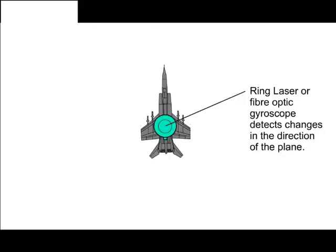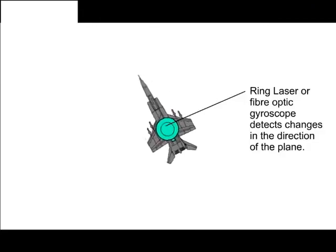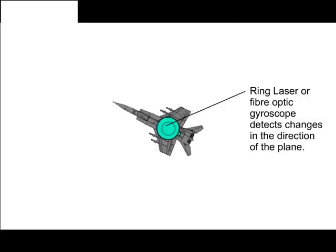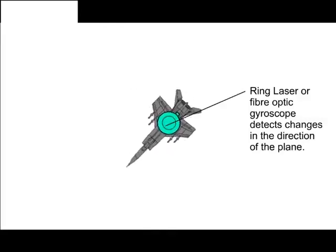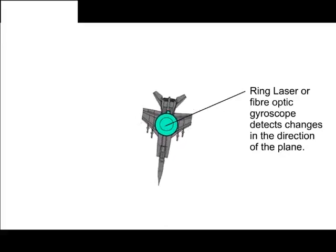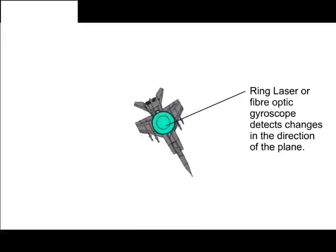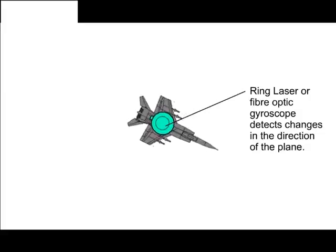This Sagnac effect is used by airlines for their compass directions. As the plane turns, the change in the fringes are translated into a change in the direction of the plane that then registers on the cockpit compass.